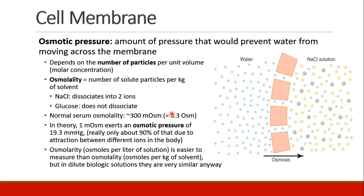In your blood, we have a variety of different solute particles, and taken all together they create a normal serum osmolality of about 300 milliosmoles, or about 0.3 osmoles. In theory, one milliosmole exerts an osmotic pressure of about 19.3 millimeters of mercury — it's actually a little less because there are some attractive forces between molecules that limit osmosis. But the point is that our normal serum osmolarity can generate quite a bit of force to move substances across membranes.